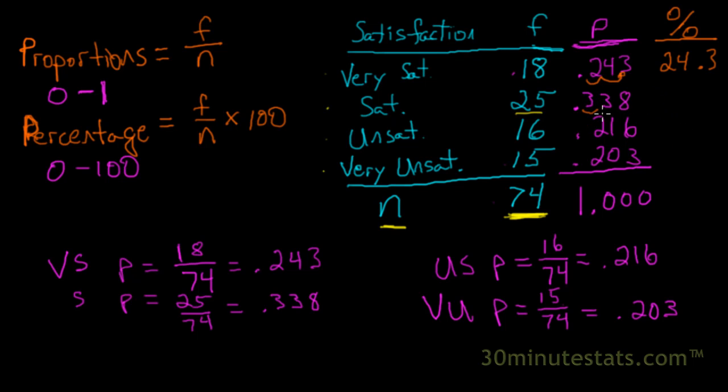If we do the same thing, move our decimal point two spaces to the right, for the satisfied respondents, then we get 33.8%.